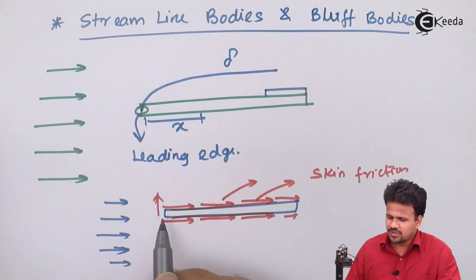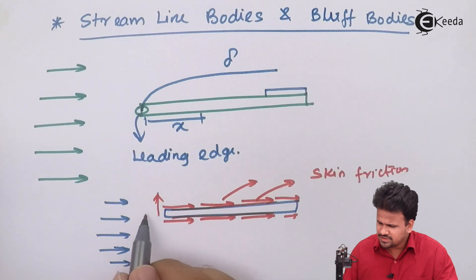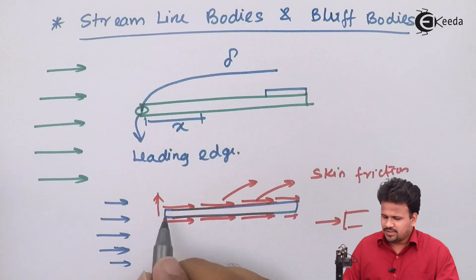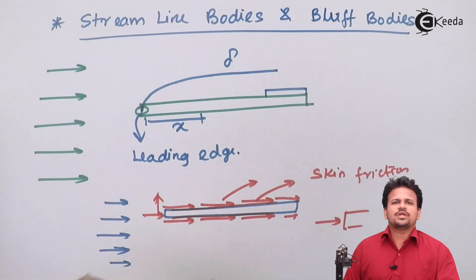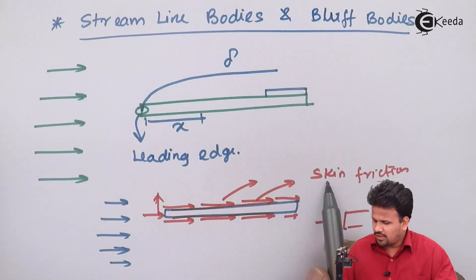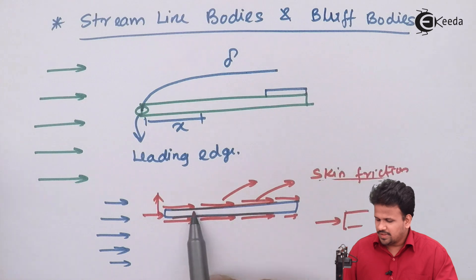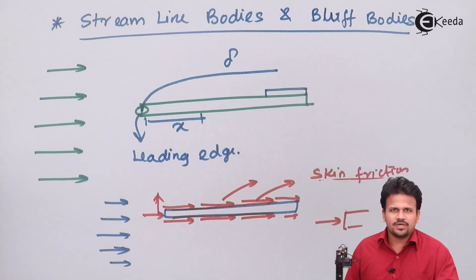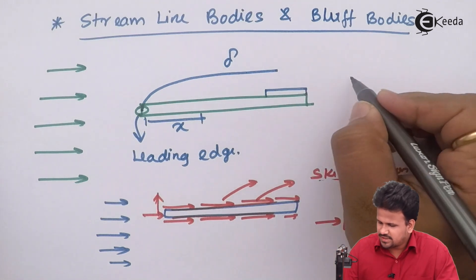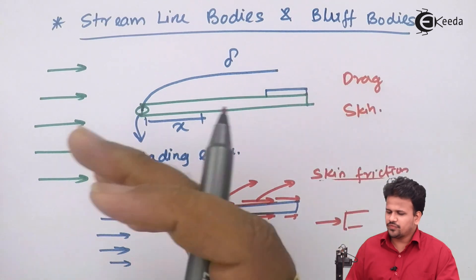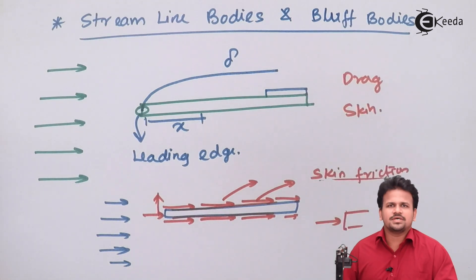The second friction will be called drag friction, in which the force is perpendicular to the surface. The friction applied on the surface will slow down the body, whereas the friction on the skin side will be a shear force applied on the body. These are the two kinds of friction — drag friction and skin friction — which are necessary to study streamlined and bluff bodies.